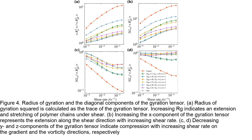The figure presents the radius of gyration and the diagonal components of the gyration tensor as a function of shear rate. The radius of gyration squared (Rg2) is the trace of the gyration tensor and represents the overall size and shape of the polymer chains. The x-component (Gxx) represents chain extension in the shear direction, while the y and z components (Gyy and Gzz) represent compression in the gradient and vorticity directions, respectively. All architectures exhibit extension in the flow direction and compression in the gradient and vorticity directions as shear rate increases. Linear chains show the highest increase in Rg2 and Gxx, while star polymers show the lowest.